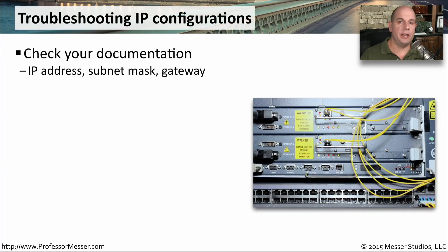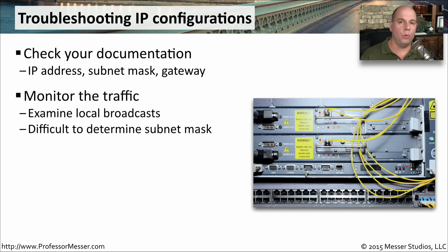The first step should be to confirm that your device is configured with the correct IP address information. We need to check documentation for the IP address, subnet mask, and make sure the default gateway is set correctly. Then we need to look at what your device is sending — specifically local broadcasts — to see what IP addresses are being sent out, since those will generally be limited to a single IP subnet.